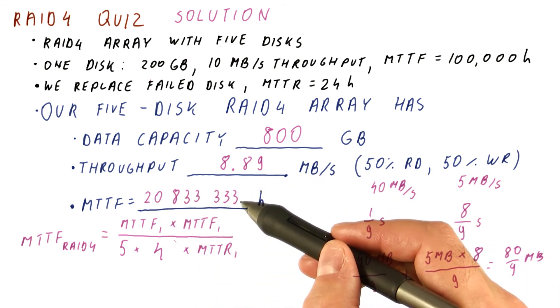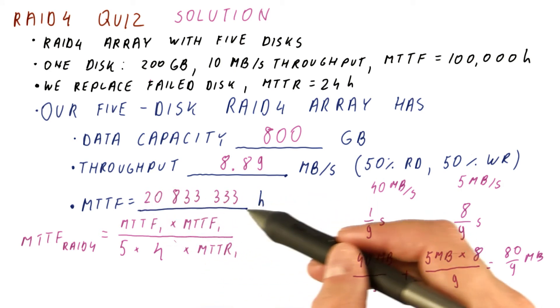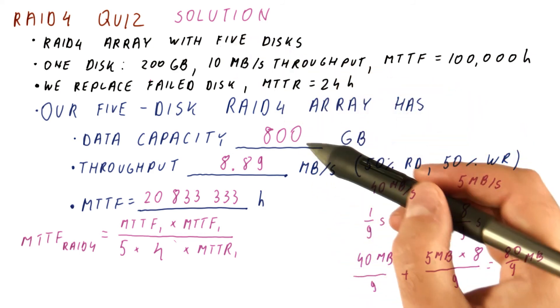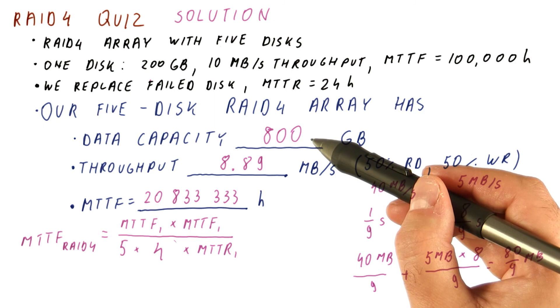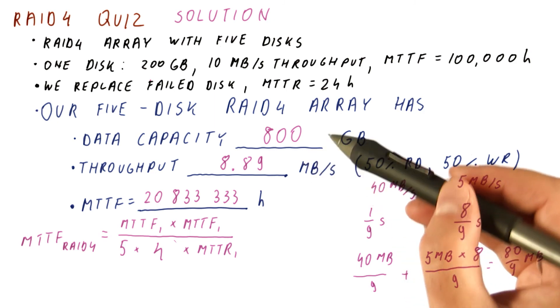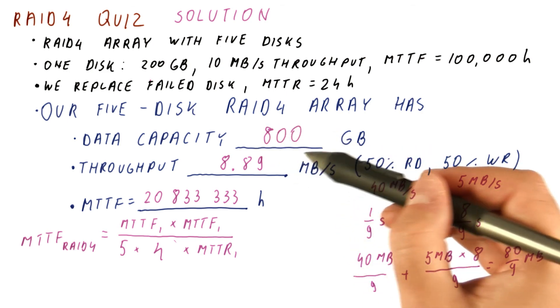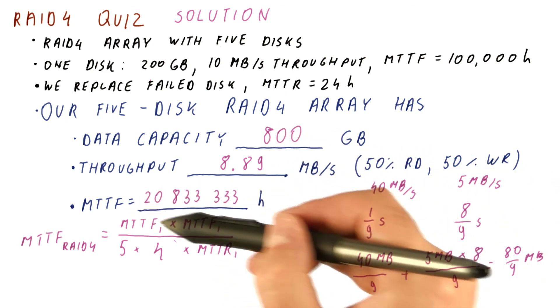Remember that our RAID 1 had 20,000 years, so this is significantly worse than RAID 1. But on the other hand, we are working with five disks here and spending only one-fifth of our capacity on parity. With RAID 1, we were working with only two disks and spending half of the capacity of the array on parity. So we sacrificed some MTTF to get better cost per gigabyte, but we still achieve a very, very high MTTF.